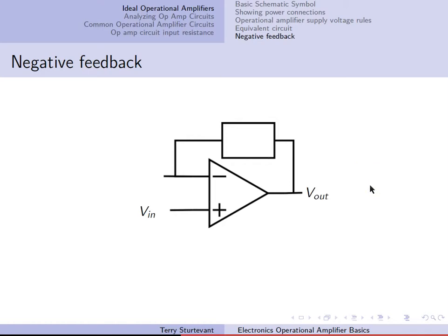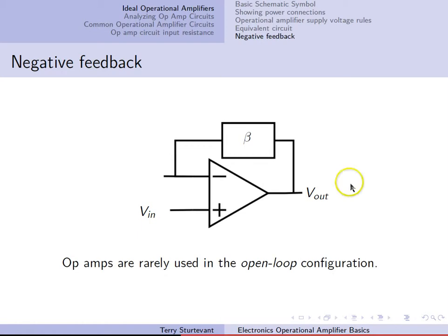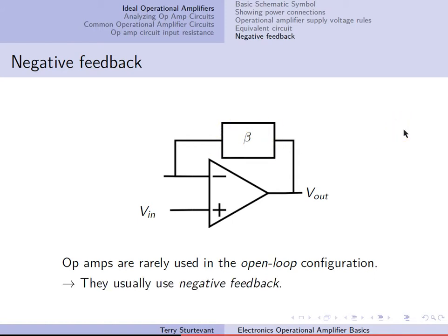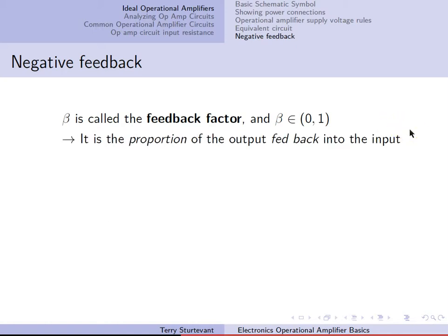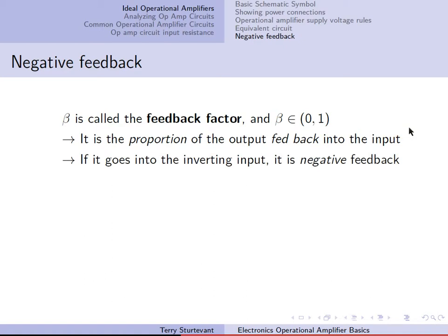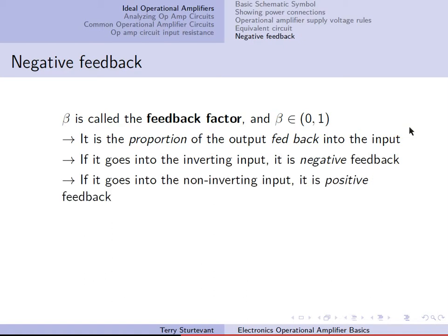Normally, op-amps are used with negative feedback, which means that a portion of the output is fed back into the inverting input. Op-amps are rarely used in the open-loop configuration, meaning without any feedback. The feedback factor is called beta and is a number between 0 and 1 — it's the proportion of the output fed back into the input. If the feedback goes into the inverting input, it's called negative feedback. If it goes into the non-inverting input, it's called positive feedback.